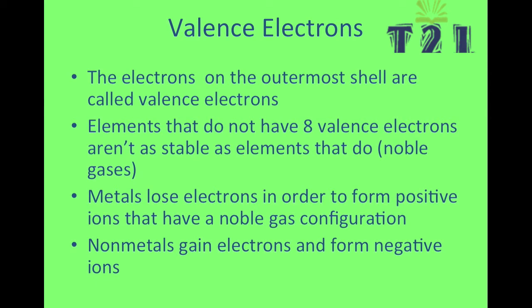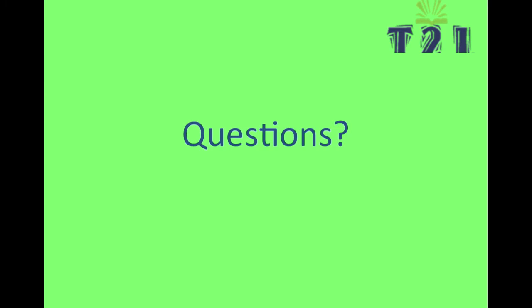Valence electrons are the number of electrons located on the outermost principal energy level or shell of an atom. This number determines the chemical properties, which is why elements within groups have very similar properties.